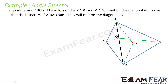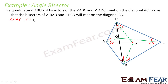We have drawn the diagonal BD and the angle bisectors of ABC and ADC. We label the half-angles: angle 1 and angle 1-dash for angle ABC, angle 2 and angle 2-dash for angle ADC, angle 3 and angle 3-dash for angle BAD, and angle 4 and angle 4-dash for angle BCD. We are told angle 1 equals angle 1-dash, angle 2 equals angle 2-dash, angle 3 equals angle 3-dash, and angle 4 equals angle 4-dash.